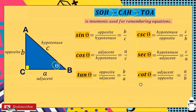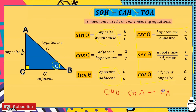It's easier to remember cosecant, secant, and cotangent once you know SOH-CAH-TOA, since they are just the reciprocals. So those are the six trigonometric ratios.